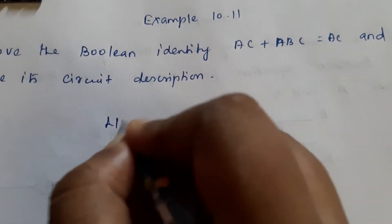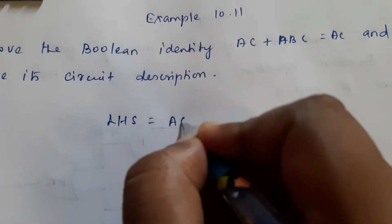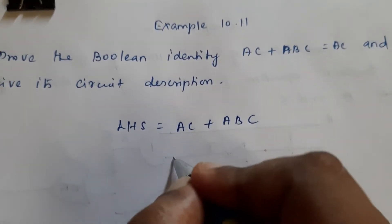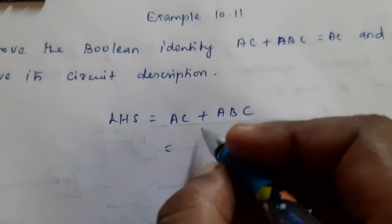Now, left hand side of the equation we will take. That is AC + ABC. Now, from these two, I am going to take A outside.